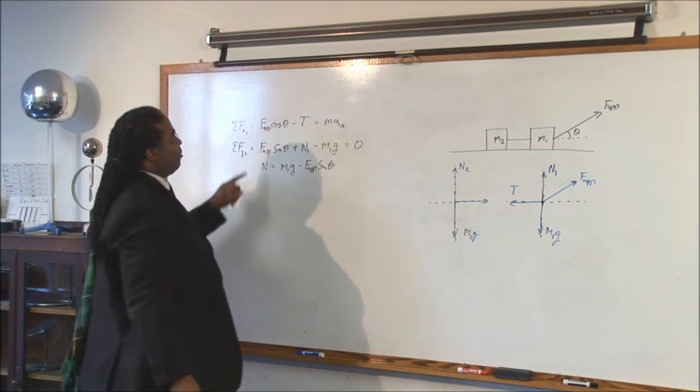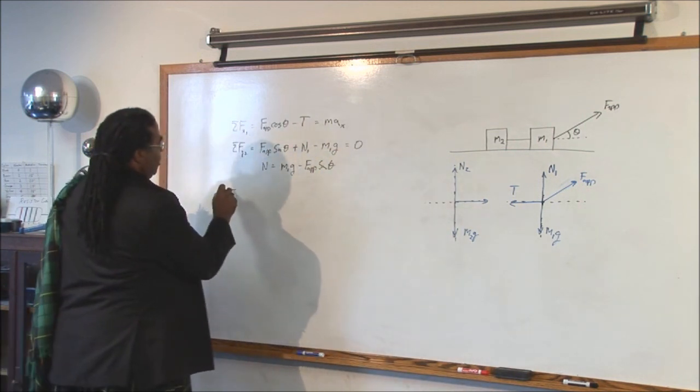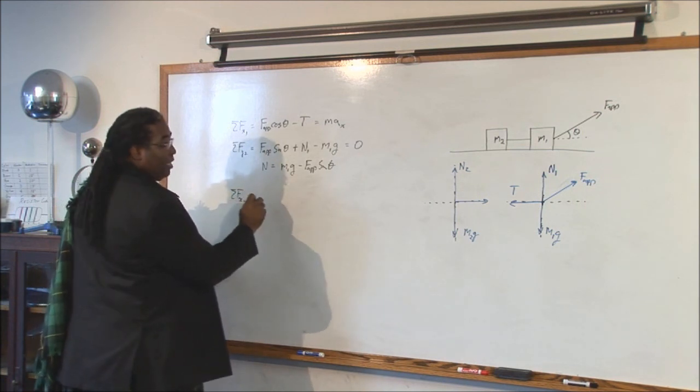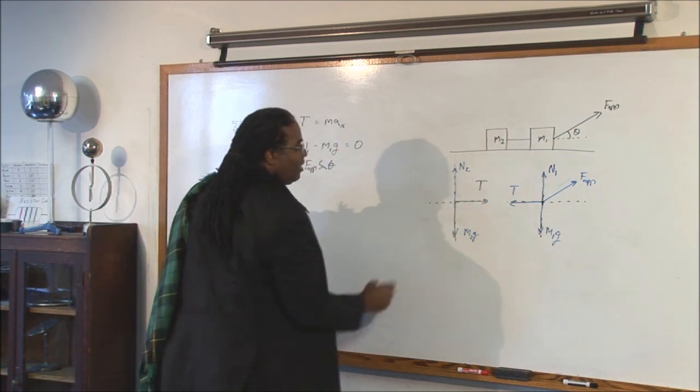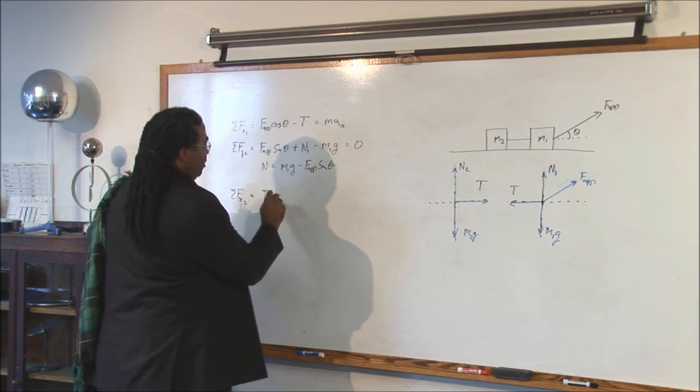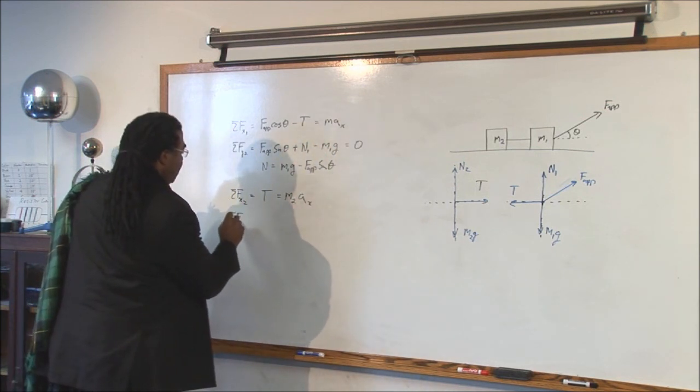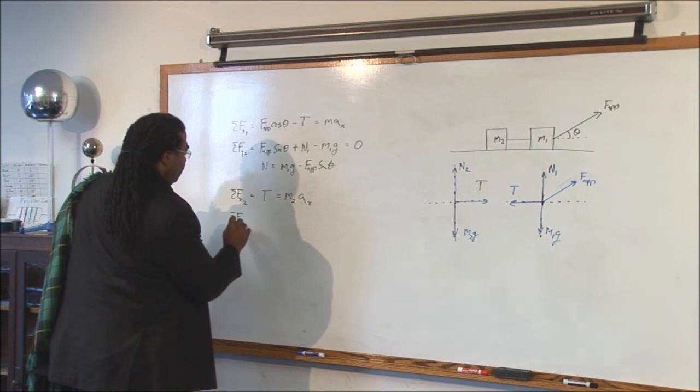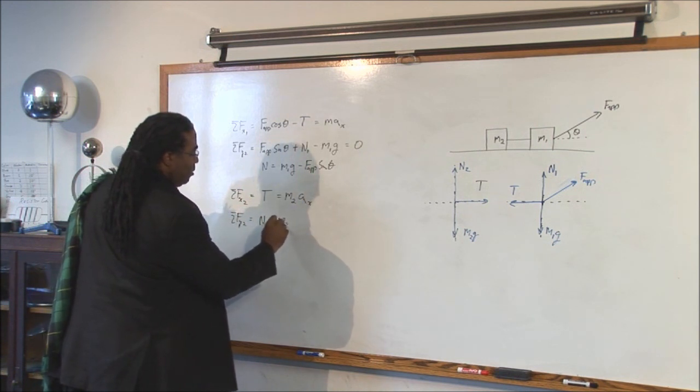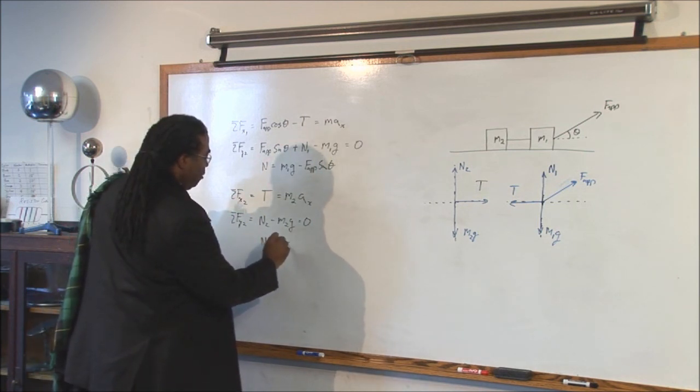Now let's go back to our x component because this is...oh yeah, let's do block two first, sorry. Okay. So now, the sum of the forces in the x on block two, we have the tension, forgot to write that, and there are no other forces going in the left or the right. So, this is equal to M two a, and that's in the x. The sum of the forces in the y on block two would be N sub two minus M two g. Again we know that's equal to zero, so the normal force on two is equal to M two g.